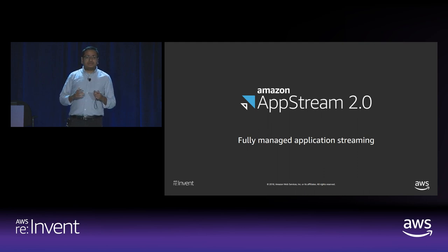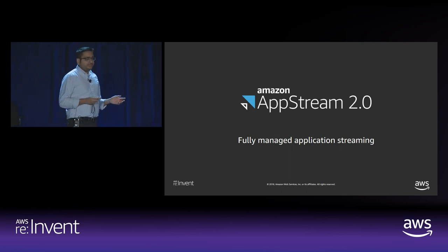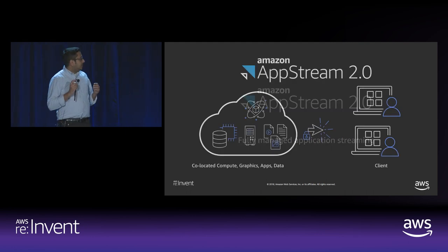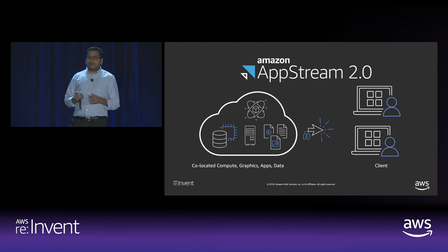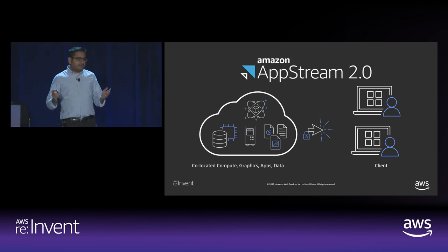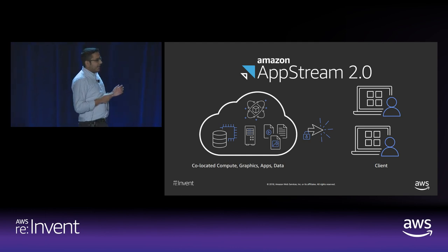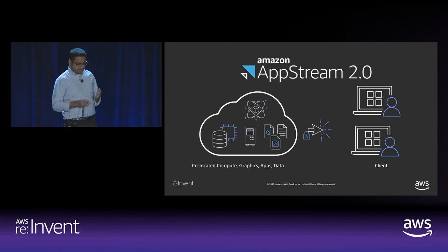Amazon AppStream is a fully managed AWS service that enables customers to run Windows desktop applications in the cloud and stream them to any browser on any device. Your users can connect and access their application instantly using any modern HTML5 browser. Your applications run on dedicated virtual machines — instances in EC2 — on the cloud, safe and secure. Your applications get all the compute, memory, and GPU resources they need, and our service captures the application frames and streams them as encrypted pixels to end users' browsers.